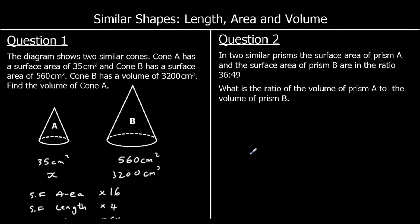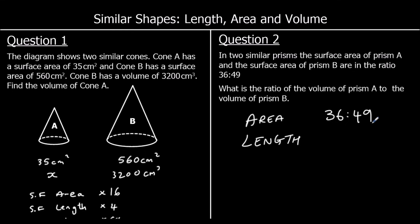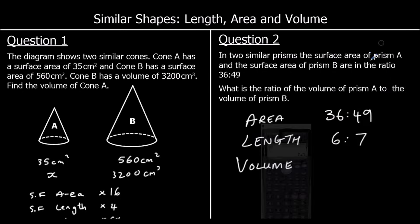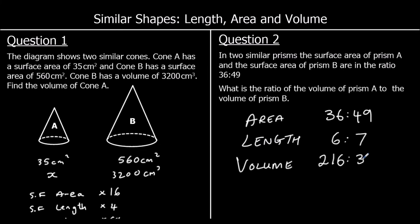Question two: two similar prisms. The surface area of prism A to prism B is in the ratio 36 to 49. Find the ratio of volumes. The area scale factor is scale factor squared, so to get the length scale factor we square root: square root of 36 is 6, and square root of 49 is 7. For volume, we cube the length scale factor: 6 cubed is 216, and 7 cubed is 343. So the ratio of volumes is 216 to 343.